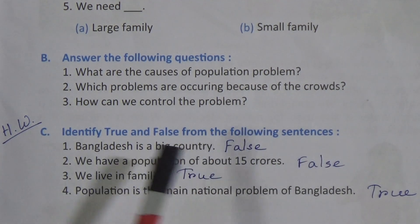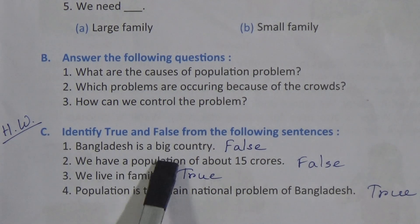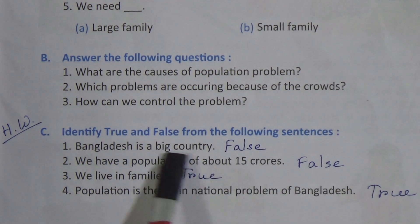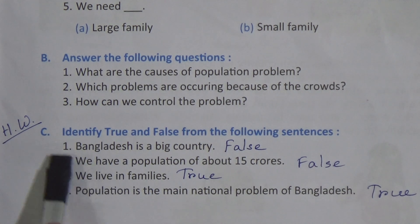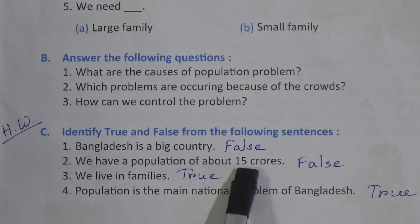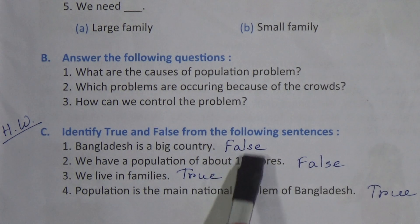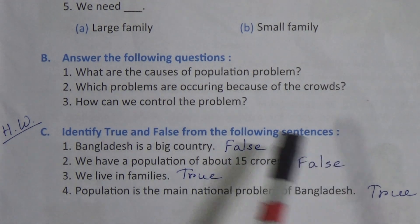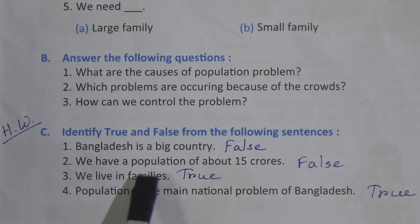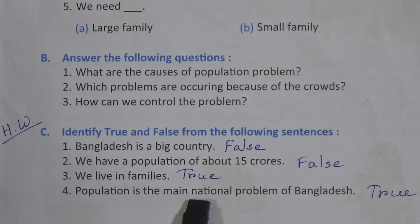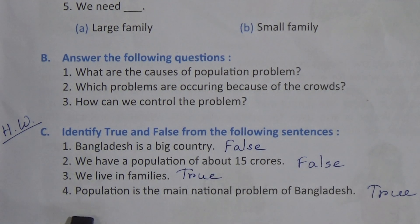Number one: 'Bangladesh is a big country' — this is false, our country is actually small. Number two: 'We have a population of about 15 crores' — in the lesson it is 16.62 crores, so this is false. Number three: 'We live in families' — this is true. Number four: 'Population is the main national problem of Bangladesh' — this is also true. Please do this homework carefully in your homework copy.